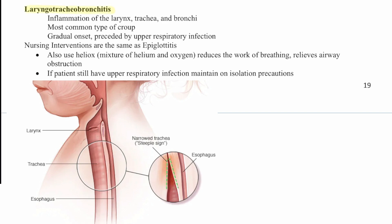Next is laryngotracheobronchitis — inflammation of the larynx, trachea, and bronchi. It's the most common type of croup, with a gradual onset preceded by upper respiratory infection. Nursing interventions are the same as epiglottitis. We also use HELIOX, a mixture of helium and oxygen, which reduces the work of breathing and relieves airway obstruction. If the patient has an upper respiratory infection, maintain isolation precautions.